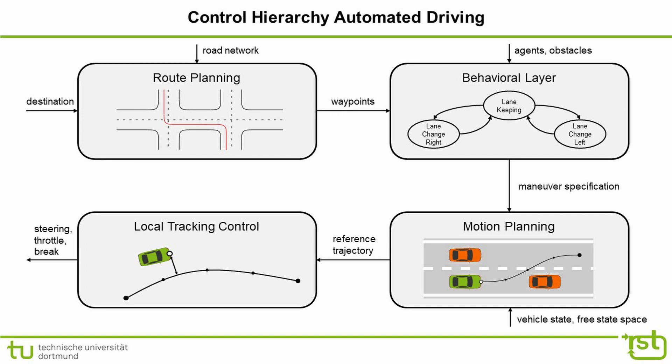In the first step, the route planner finds a path through the road network. The behavioral layer determines high-level actions to achieve progress along the path. Conditioned on a chosen action, the motion planner considers other vehicles and dynamic limitations and outputs a future trajectory for the automated vehicle. The local tracking control generates signals for the actuators to closely follow the planned trajectory.